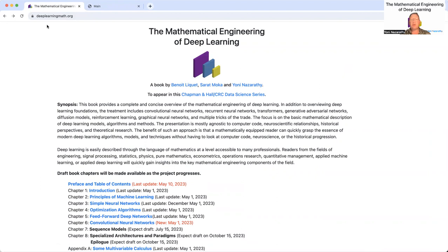This book provides a complete and concise overview of the mathematical engineering of deep learning. In addition to overviewing deep learning foundations, the treatment includes convolutional neural networks, recurrent neural networks, transformers, and generative adversarial networks.